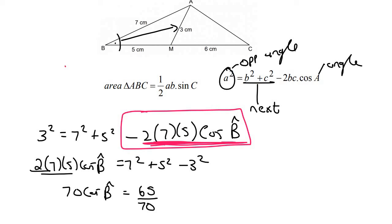You can then divide by 70. You can then say shift cos of 65 over 70. And you'll find that that angle is 21.79 degrees.